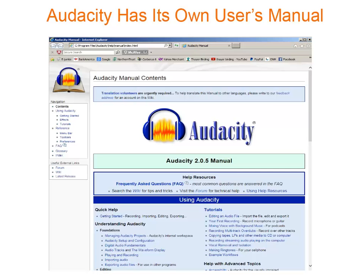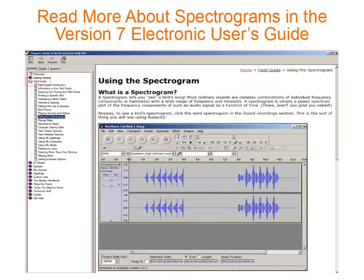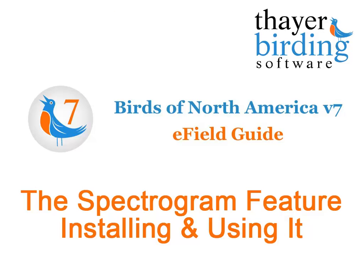Audacity has its own user's manual — read this to see all the things you can do with this spectrogram feature. The Electronic User's Guide in version 7 also has an entire article about spectrograms. To use a spectrogram in version 7, you need to download a program called Audacity or RavenLight. This is not mandatory, but we think it is a great feature.